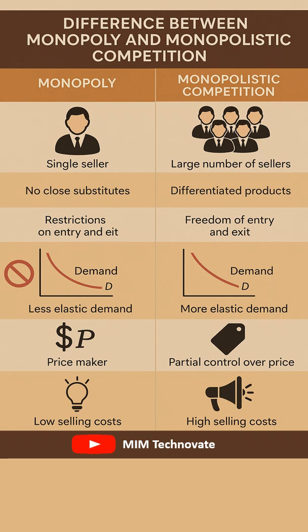In a monopoly market, there is only one seller. However, the monopolistic market consists of a large number of sellers.